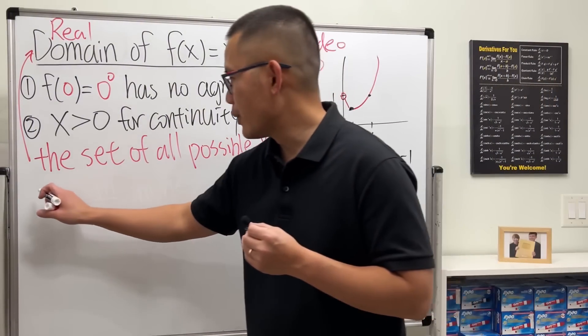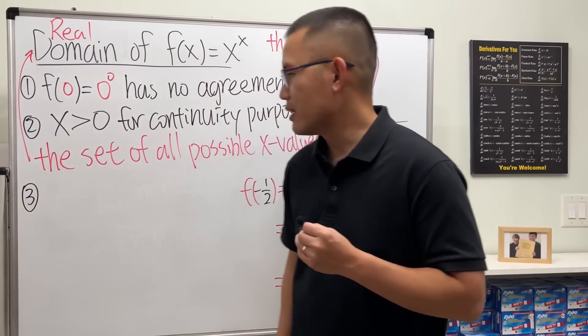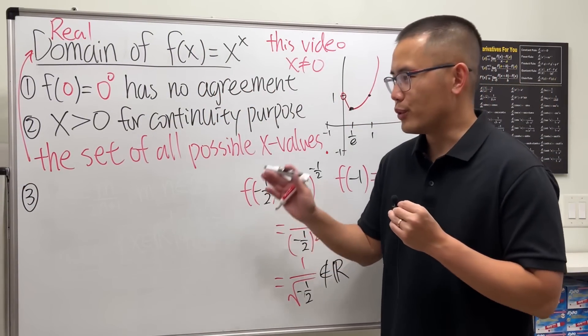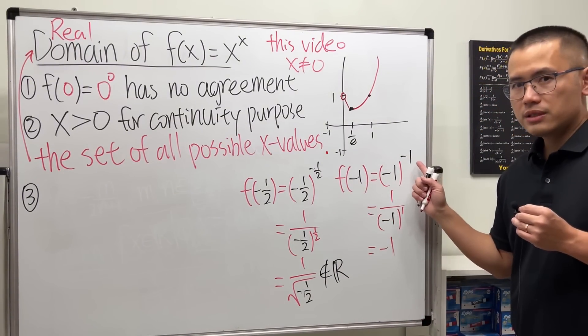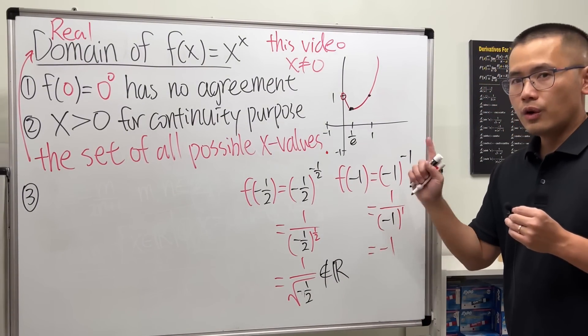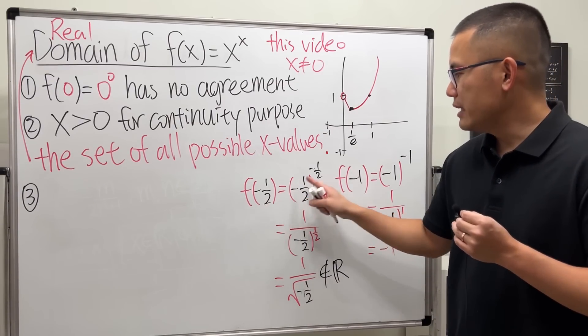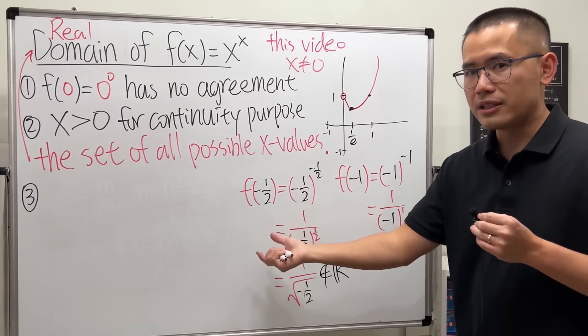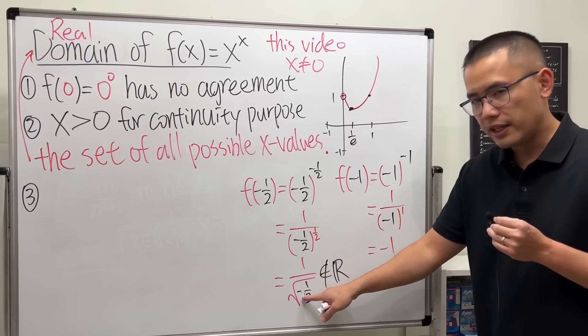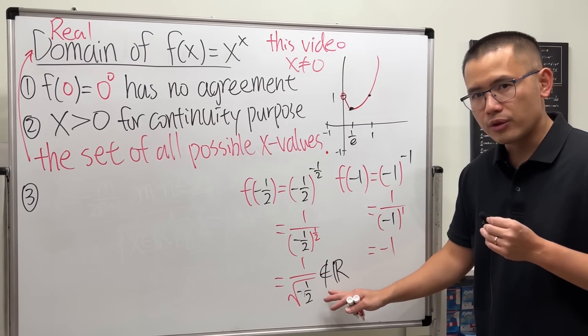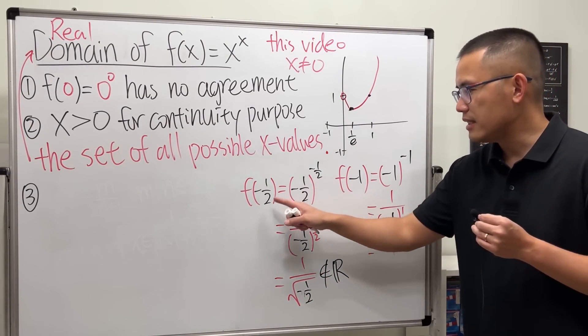So what are the things we can use? I want to thank the viewers who suggested I write down the answer for this. Some negative numbers work, some don't. If you have an even denominator, it won't work because you end up with an even root of a negative number, which is not real. But if you have an odd denominator, it will work.